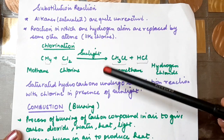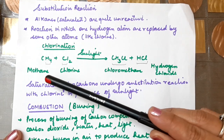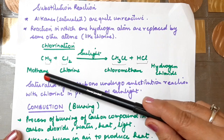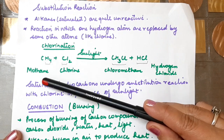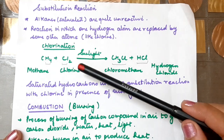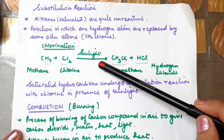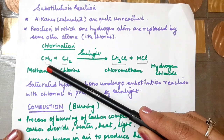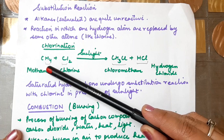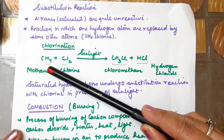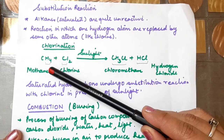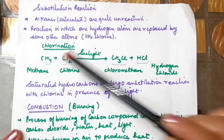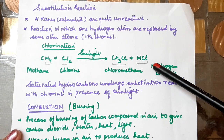Let's understand it better with an example. Methane is an alkane because of the '-ane' suffix. It reacts with chlorine in the presence of sunlight, and a substitution reaction occurs. That means from CH₄, one hydrogen is removed and a chlorine atom is attached. So CH₃Cl is formed and HCl is also released.